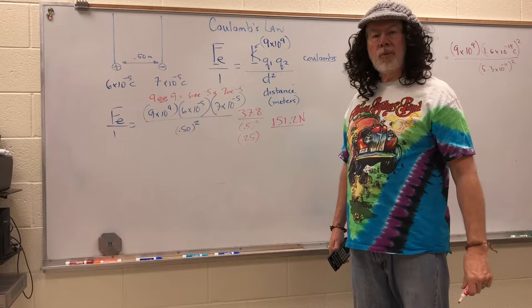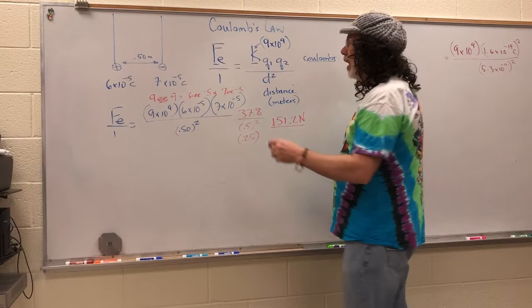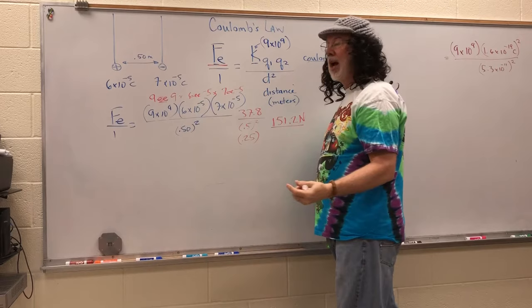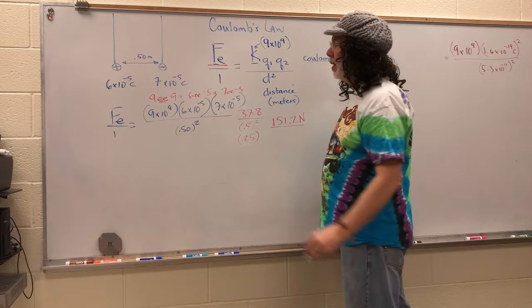Does everybody understand what we've just shown? One of the nice things about Coulomb's law is that we just solved for the force, but this equation can be rearranged algebraically. You could solve for the charge, you could solve for the distance, or you can solve for the force depending on the information that's given.